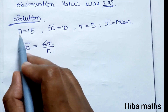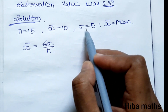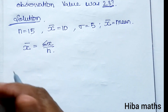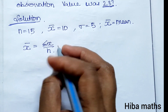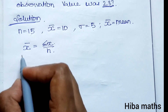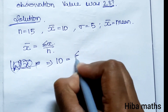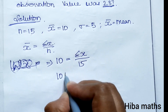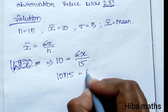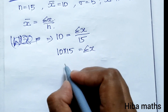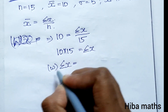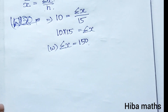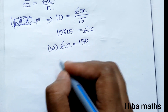In the solution, the number of observations n is 15, mean is 10, standard deviation is 5. We substitute into the mean formula: mean = summation of x divided by n. So summation of x equals mean times n, which is 10 into 15, giving us the wrong total sum of observations as 150.